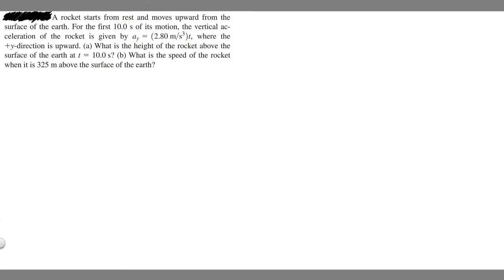In this problem, we're told a rocket starts from rest and moves upward from the surface of the earth. For the first 10 seconds of its motion, the vertical acceleration of the rocket is given by a_y equals 2.8 meters per second cubed times t, where the plus y direction is upward. Part A asks what is the height of the rocket above the surface at t equals 10 seconds? Part B asks what is the speed of the rocket when it is 325 meters above the surface of the earth?